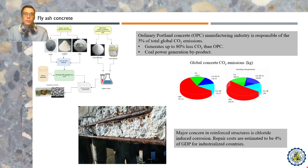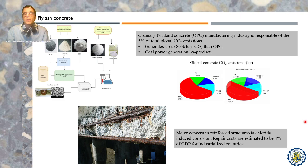Fly ash is a byproduct from several industries, such as coal power generation. This material has pozzolanic properties that, when combined with a highly alkaline solution such as sodium hydroxide, forms a gel. This process, described in the figure, is known as geopolymerization.